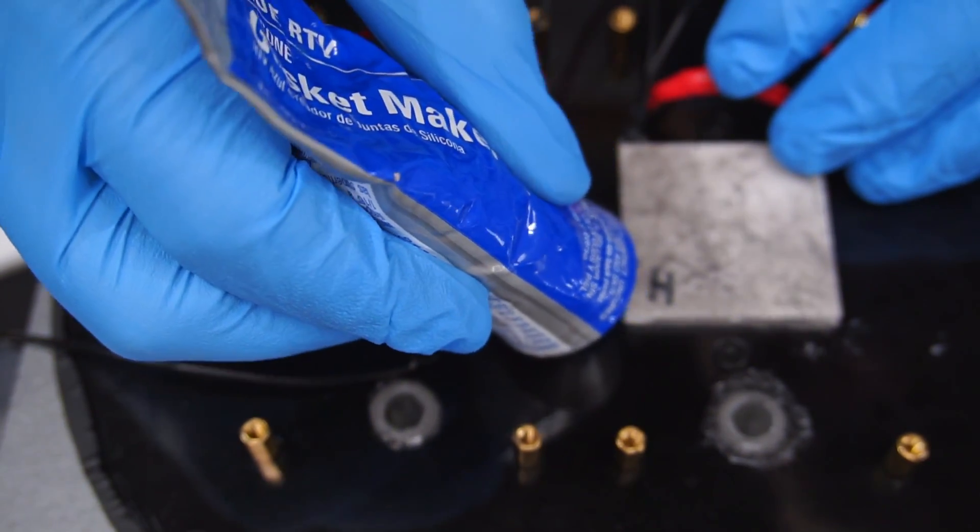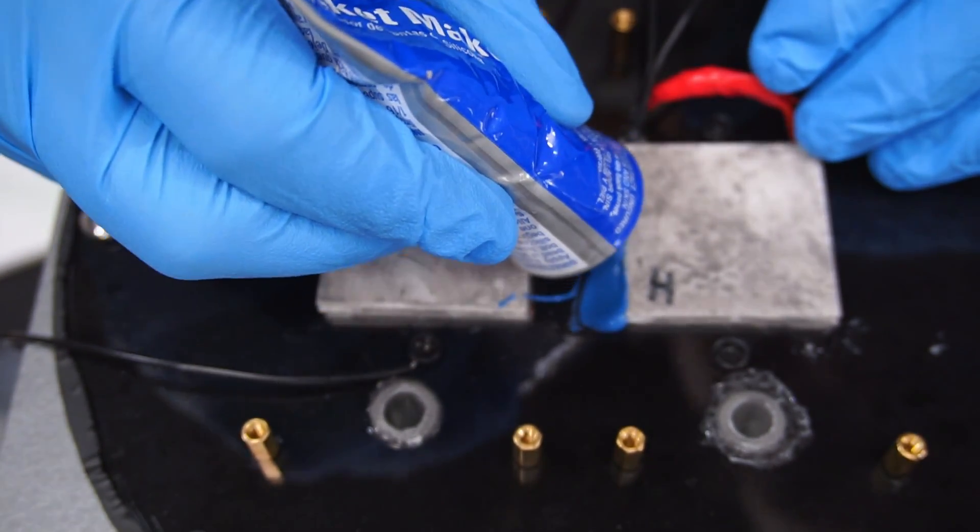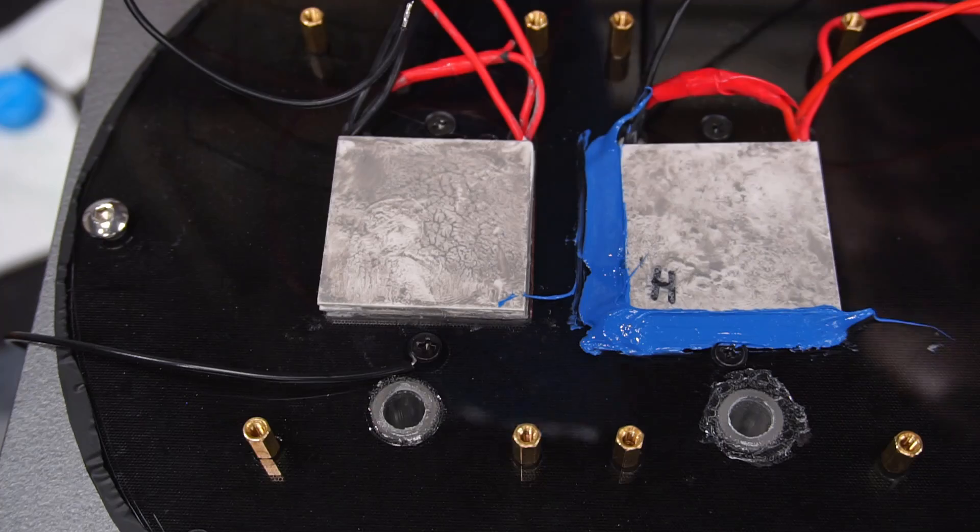Thermal compound is used between the cold plate and Peltiers. Because my enclosure will have positive air pressure from the fans, I needed to use sealant around the Peltiers to prevent air turbulence inside the chamber.